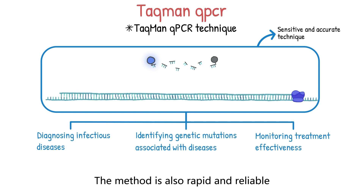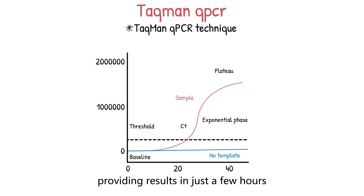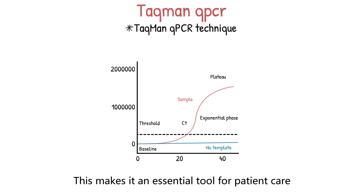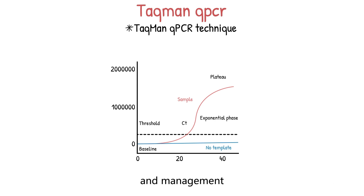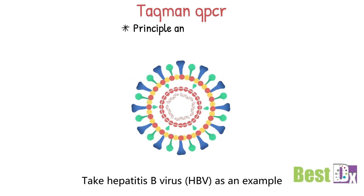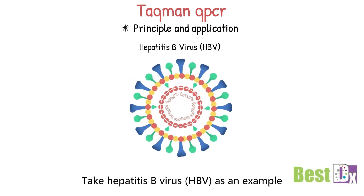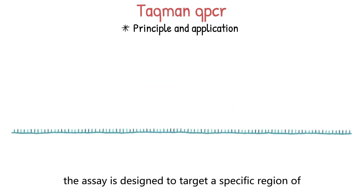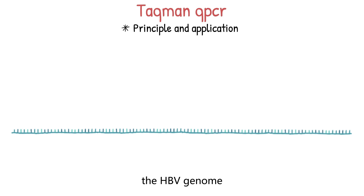The method is also rapid and reliable, providing results in just a few hours. This makes it an essential tool for patient care and management. Take hepatitis B virus or HPV as an example. First, the assay is designed to target a specific region of the HPV genome.